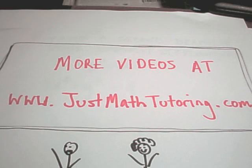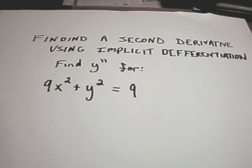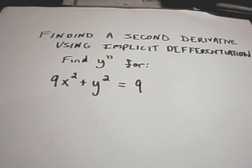All right, in our next video, we're going to talk about finding a second derivative on a problem where we have to use implicit differentiation. The ideas are pretty much the same as with regular implicit differentiation. You just have to do it twice.